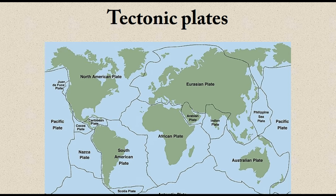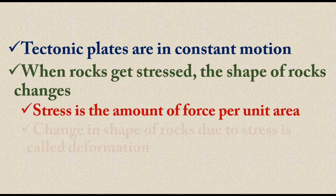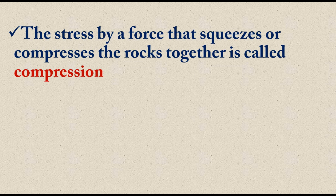This motion can create a lot of deformations on the earth's surface. There is huge pressure when two plates come close to each other. There are different types of movement — convergent, where plates come close; divergent, where they move away; and transform, where they slide past each other. Deformation is the change of shape of rocks. When tectonic plates are stressed, the shape of the rock changes. Stress is the amount of force applied on a part of a body.